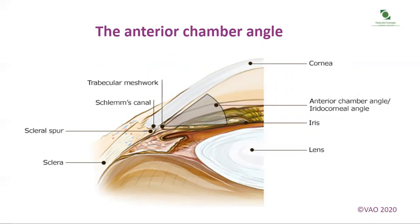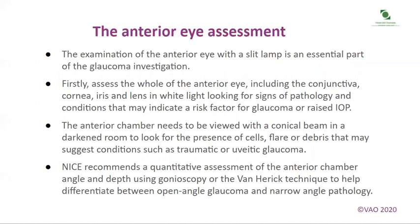Here is a schematic diagram of the anterior chamber angle showing all the significant landmarks. The examination of the anterior eye with a slit lamp is an essential part of the glaucoma investigation. Firstly, assess the whole of the anterior eye, including the conjunctiva, cornea, iris and lens in white light, looking for signs of pathology and conditions that may indicate a risk factor for glaucoma or raised IOP. The anterior chamber needs to be viewed with a conical beam in a darkened room to look for the presence of cells, flare or debris that may suggest conditions such as traumatic or uveitic glaucoma.